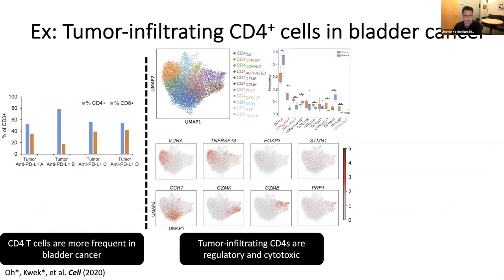We really wanted to understand the frequencies and heterogeneity of T cells infiltrating bladder cancer. One of the first results was that in bladder cancer, the vast majority of T cells that infiltrate the tumor are in fact CD4-positive and not CD8-positive. That's interesting because almost all checkpoint blockade molecules are essentially trying to either reinvigorate CD8 T cells or recruit new CD8 T cells into the tumor to kill it.